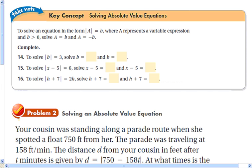To solve an equation of the form absolute value of A equals B, where A represents a variable expression and B is greater than 0, we solve A equals B and A equals the opposite of B. The reason is that when you have an absolute value, there are actually two numbers that are that distance from 0 — one to the left of 0 and one to the right. For example, to solve the absolute value of B equals 3, solve B equals 3 and B equals negative 3. For the absolute value of X minus 5 equals 6, solve X minus 5 equals 6 and X minus 5 equals negative 6. For the absolute value of H plus 7 equals 2H, solve H plus 7 equals 2H and H plus 7 equals negative 2H. There are really two equations involved in any absolute value equation.